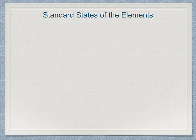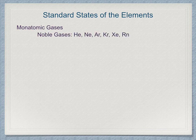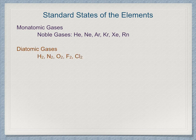For elements, some are monatomic gases. These are the noble gases: helium, neon, argon, krypton, xenon, and radon. Some are diatomic. These are hydrogen, nitrogen, oxygen, fluorine, and chlorine.